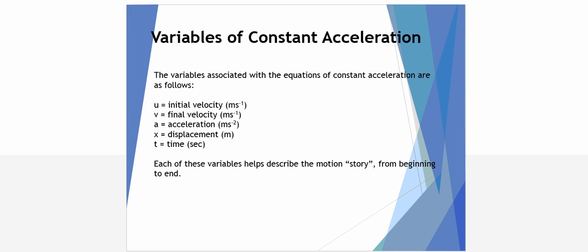There are five variables we need to consider when we're using the equations of constant acceleration. U is the initial velocity, V the final velocity, A the acceleration, X the displacement, and T the time. Each one of these five variables uses international standard units: metres per second, metres per second squared, metres and seconds.